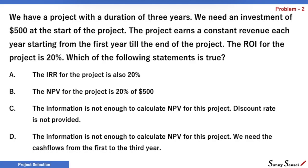Let's look at choice A. Is the IRR equal to 20%? We don't know — IRR doesn't have to be equal to ROI. IRR and ROI are totally different approaches. To find IRR, we need cash flows for year 1, 2, and 3. So A is incorrect.